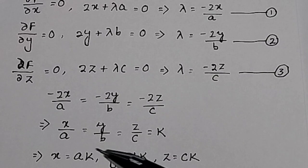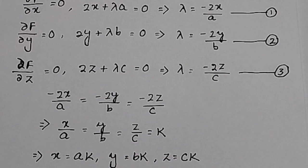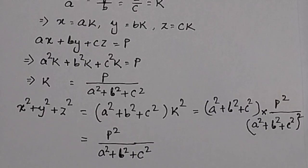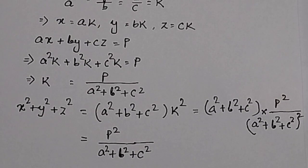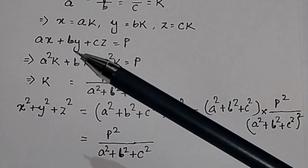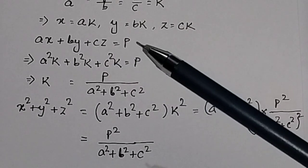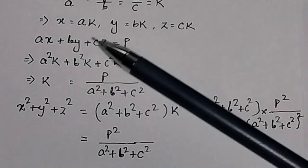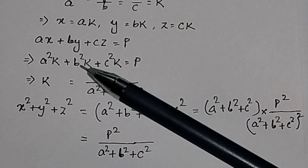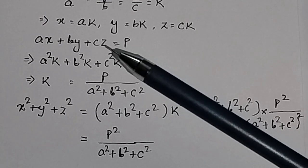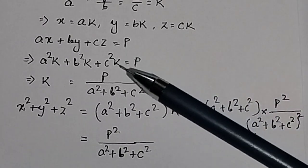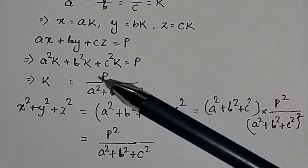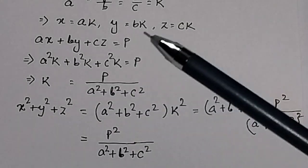Suppose x/a = y/b = z/c = k. Then x = ak, y = bk, and z = ck. Now we substitute these values into the constraint equation ax + by + cz = p. Substituting gives a·(ak) + b·(bk) + c·(ck) = p, which is a²k + b²k + c²k = p.